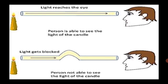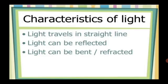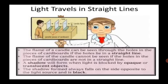This is called the linear propagation of light. Characteristics of light: Light travels in a straight line, light can be reflected, light can be bent and refracted. The flame of a candle can be seen through the holes in the pieces of cardboard if the holes lie in a straight line. The flame of the candle cannot be seen if the holes in the pieces of cardboard are not in a straight line.